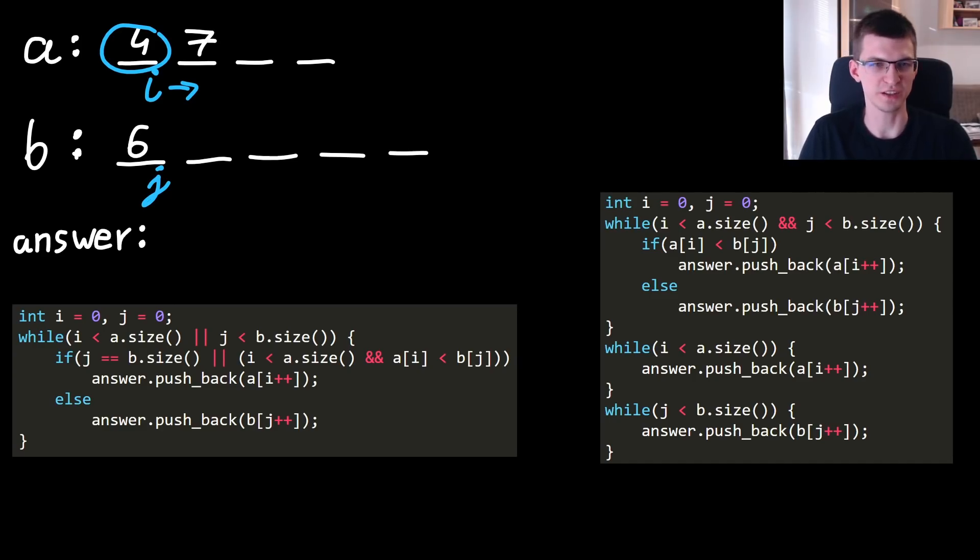Then compare b[j] with new a[i], maybe here it will be 7. 7 is bigger, so smaller value is 6. I need to take 6 to the combined array and move j to the right by 1.